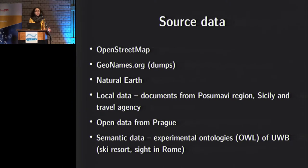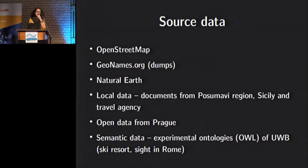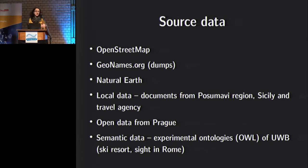The main source of data is OpenStreetMap, and we also get data from other open data sources. We have contributors from local regions — some regions in Czech Republic, some in Italy, some cities, and open data from Prague. We are also working on data from Vienna. Currently we work on data based only on coordinates, but we are going to involve other types of geolocation such as addresses.